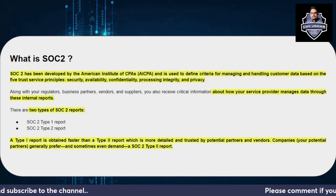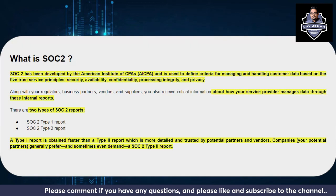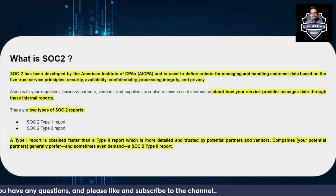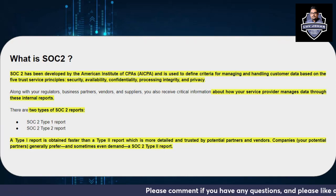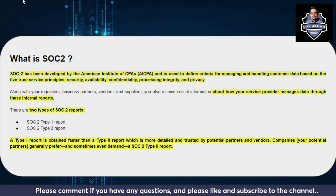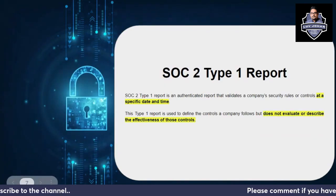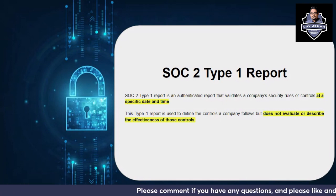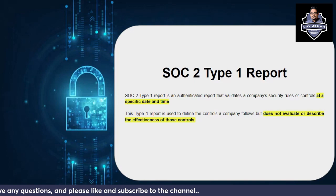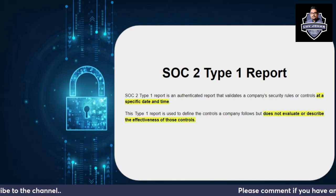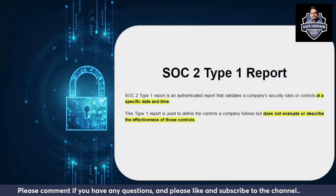There are two types of SOC 2 reports: SOC 2 type one and SOC 2 type two. Type one is obtained faster than a type two report because type two is more detailed and trusted by potential partners and vendors. Potential partners will generally prefer and sometimes even demand a SOC 2 type two report. The SOC 2 type one report is an authenticated report that validates a company's security controls and rules at a specific date and time.